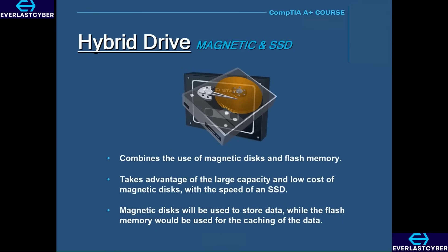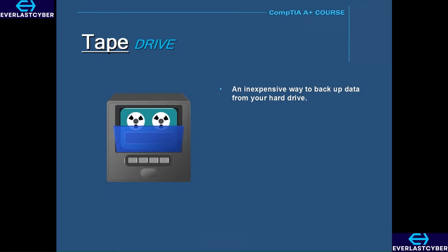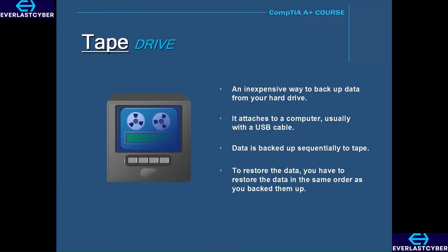Removable storage is both convenient and portable because these types of storage are not stored internally in a computer — they are attached from the outside. For instance, a tape drive. A tape drive is an inexpensive way to back up data from your hard drive. It attaches to a computer, usually with a USB cable, and the data is backed up sequentially to tape, which means that if you ever have to restore the data, you have to restore it in the same order as you backed it up.